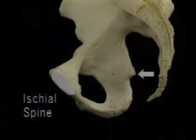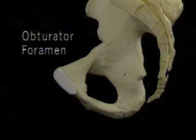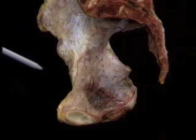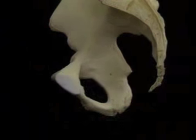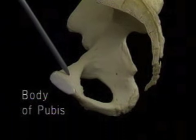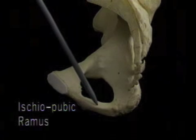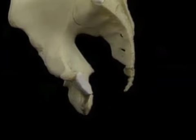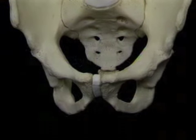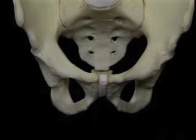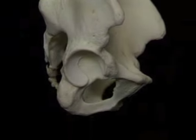This sharp prominence is the ischial spine. The large hole in the lower part of the hip bone is the obturator foramen. In the living body, it's largely closed off by the obturator membrane. This is the body of the pubis. The part of the hip bone below the obturator foramen is the ischiopubic ramus. The two ischiopubic rami, meeting in front at the pubic symphysis, form the pubic arch. When seen from the side, the ischiopubic rami slope backward and downwards toward the ischial tuberosities.